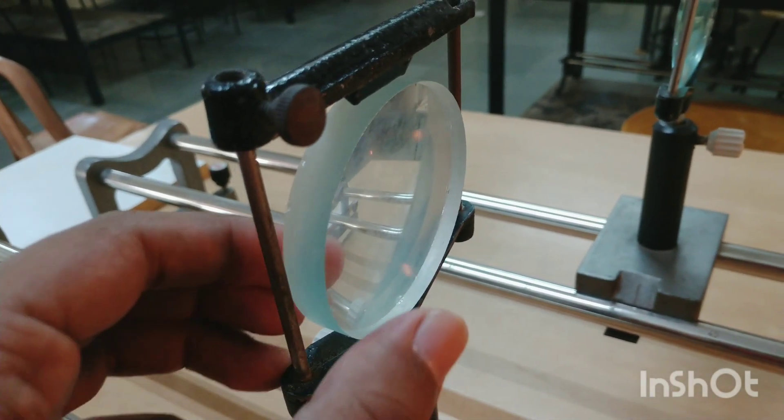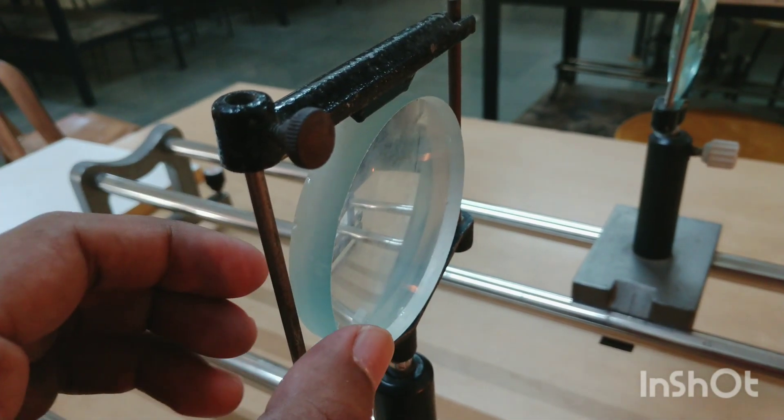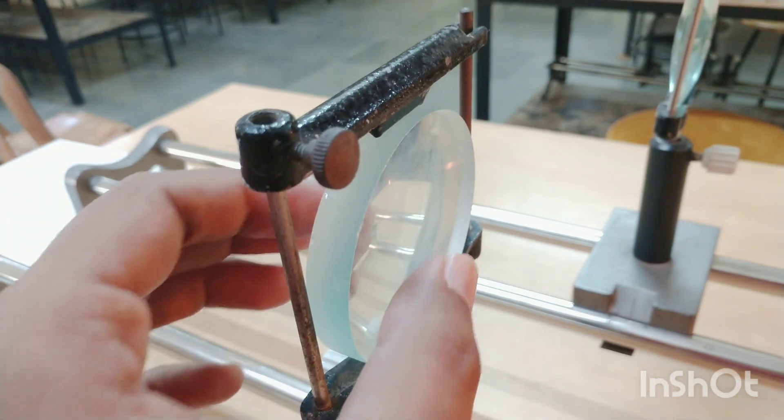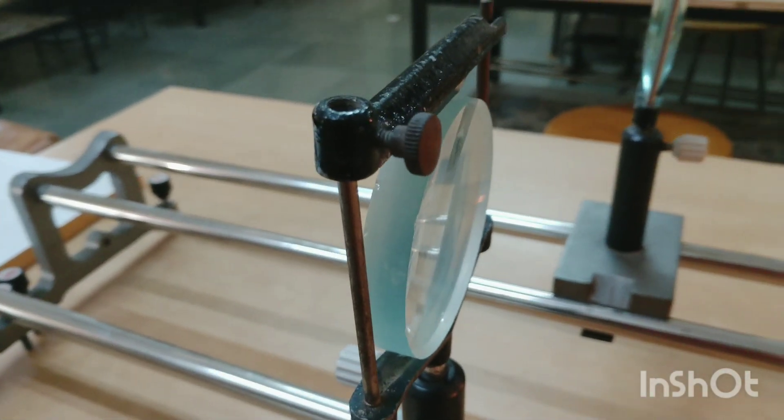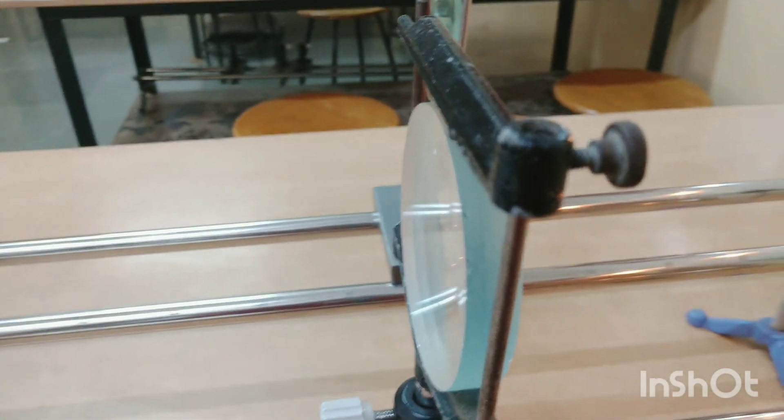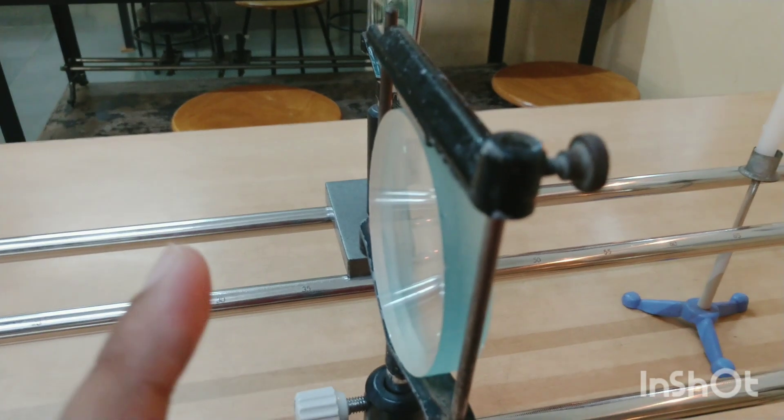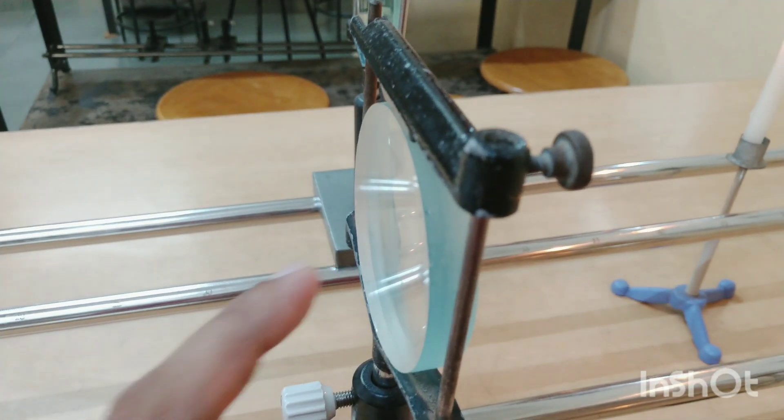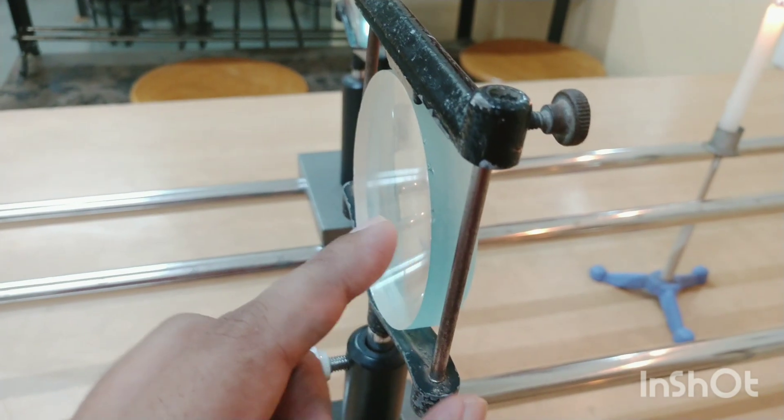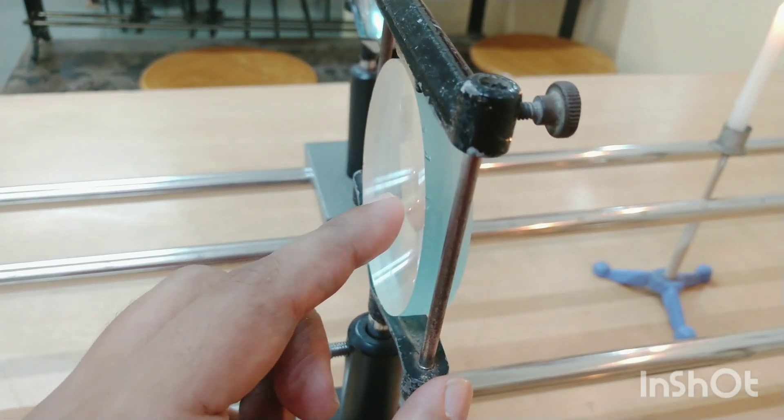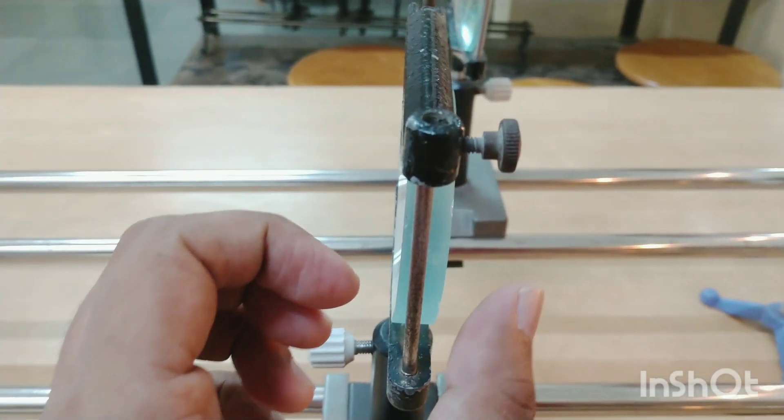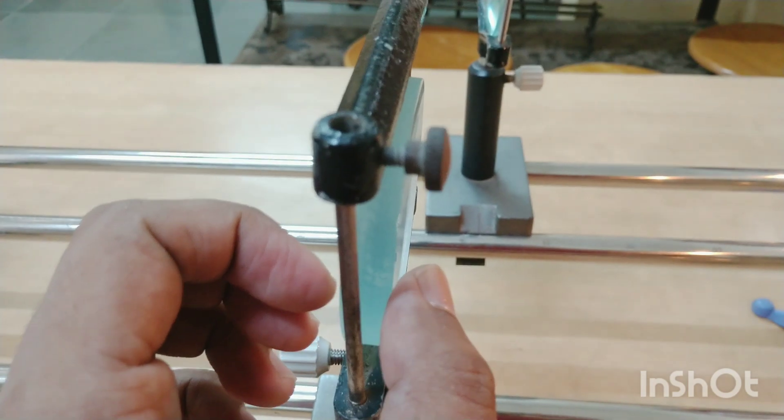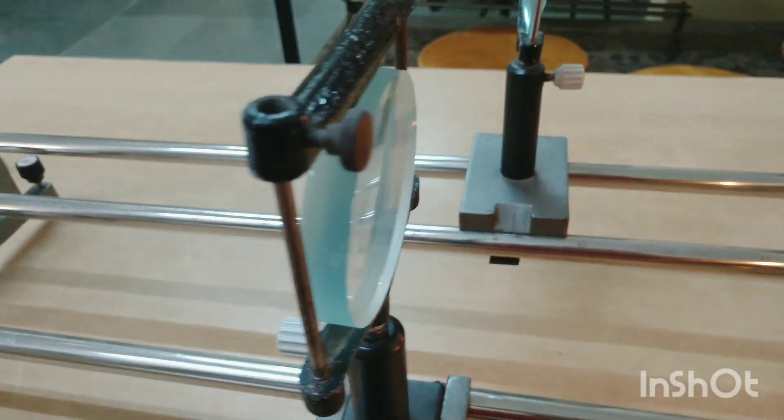So here you can see the edge is wide and the center is tapering. If you could touch this lens, you will feel a curvature inward, and the edges of a concave lens will be wide compared to edges of a convex lens.